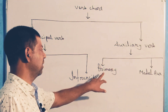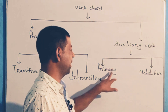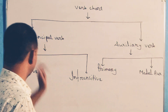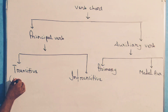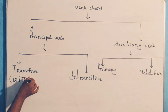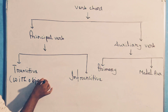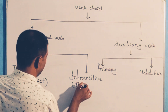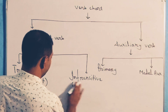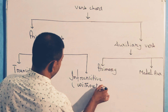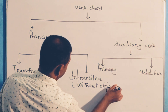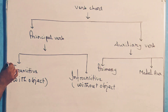Now come to the principal verb — transitive verb. What is a transitive verb? The verb which has an object — write down 'with object' — is called a transitive verb. In an intransitive verb, the verb which has no object — meaning 'without object' — is called an intransitive verb.